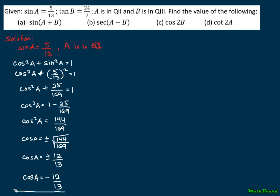Now we move on to the values of sine B and cosine B, using the value of tangent B equals 24 over 7. The angle B is in the third quadrant, so sine and cosine are both negative. We're going to use the Pythagorean identity: 1 plus tangent squared B equals secant squared B.